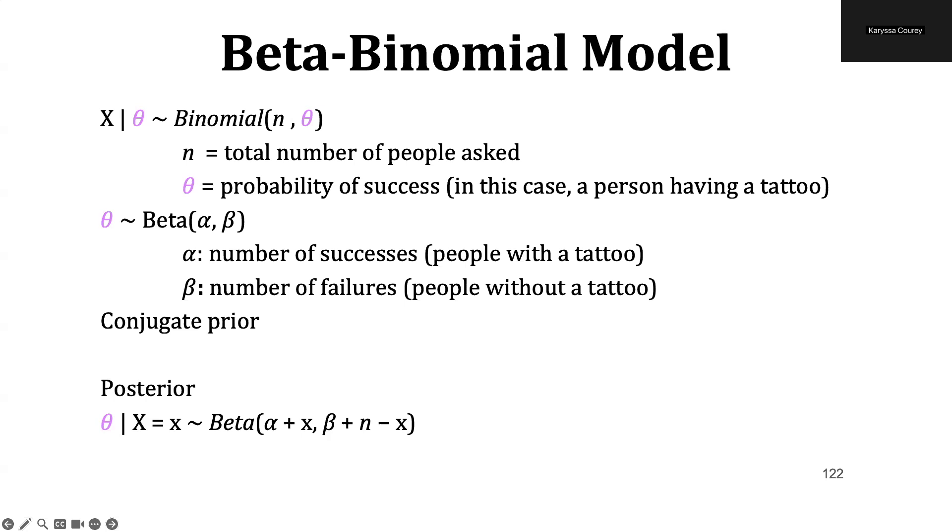So when working with the binomial likelihood, we can apply something called a conjugate prior. And this means that if we choose a certain prior distribution, in this case, a beta distribution, the posterior will be the same family as the prior distribution. So in this case, a beta distribution is a conjugate prior to the binomial likelihood. And so we get a posterior that is also a beta distribution.